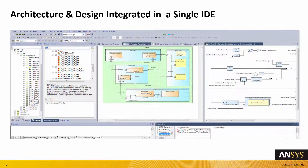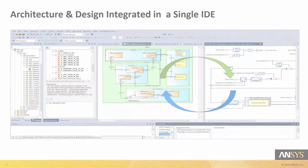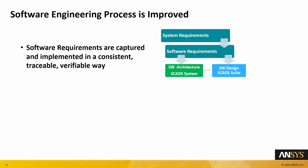An architectural block and its corresponding implementation can be synchronized. Interface modifications will be managed on both sides. As a result, the overall software engineering process is improved. Software requirements are captured and implemented in a consistent, traceable, verifiable way at architecture and design level with SCADE System and SCADE Suite.